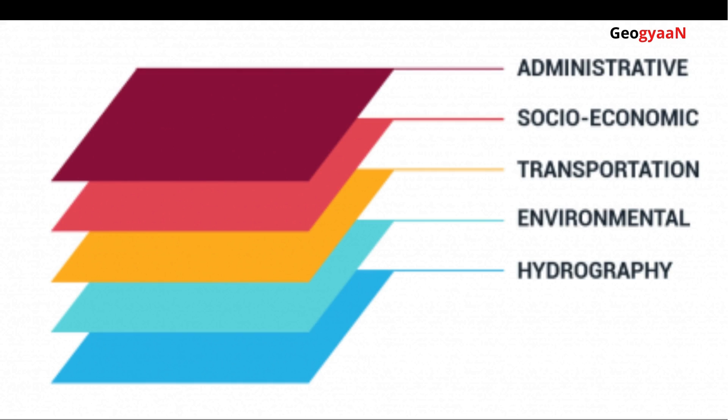Cultural themes include administrative boundaries, cities and planning, and socioeconomic data such as demographics, economy, and crime. Transportation themes include roads, railways, and airports. Physical themes include environmental data, agriculture, soils and climate, hydrography data such as oceans, lakes and rivers, and elevation data covering terrain and relief.